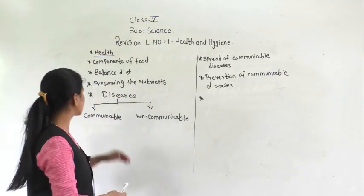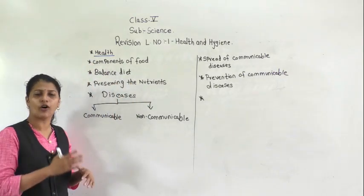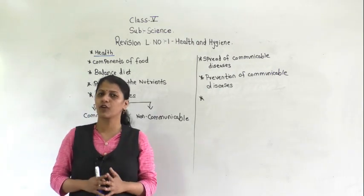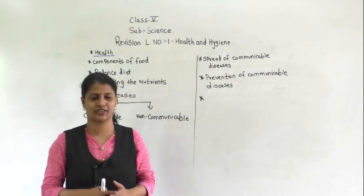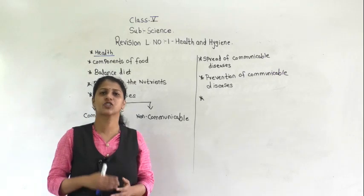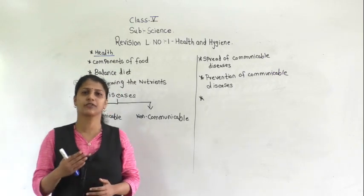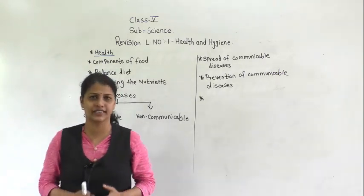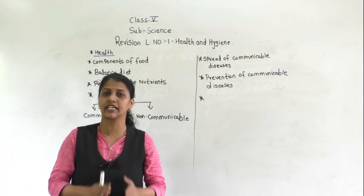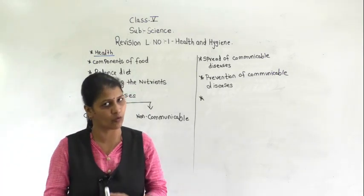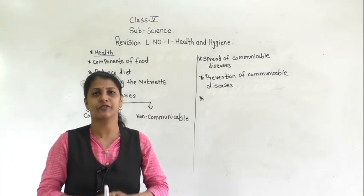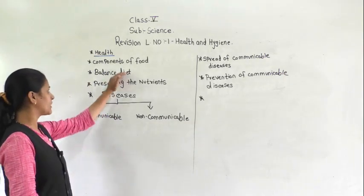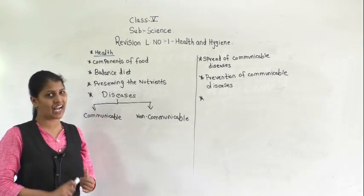Then we discussed the components of food. There are mainly 5 types of components of food: carbohydrates, fats, protein, vitamins, and minerals. Along with these, we also need roughage and water.